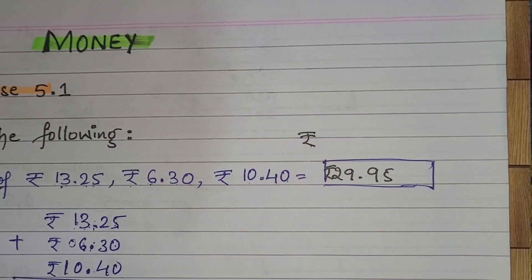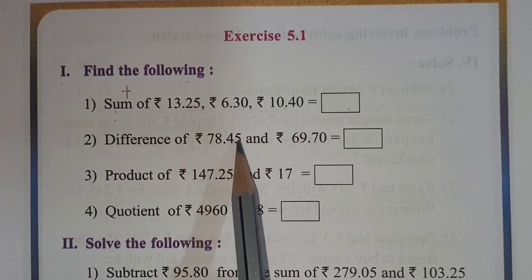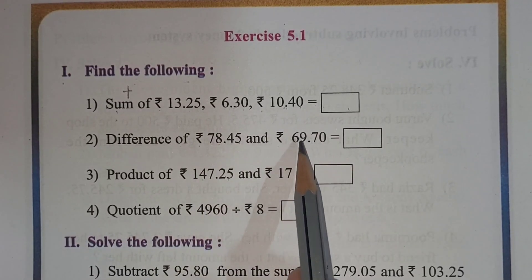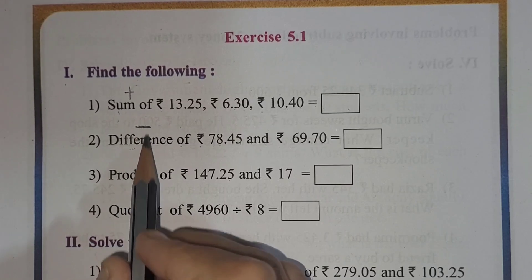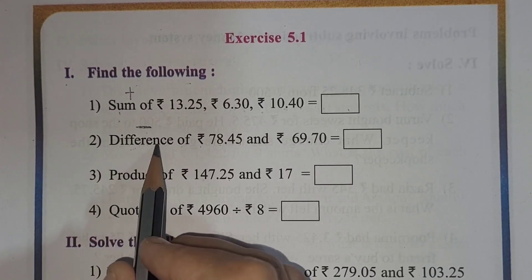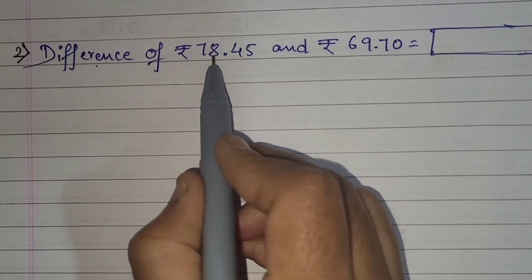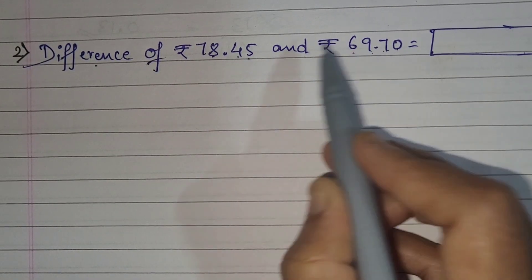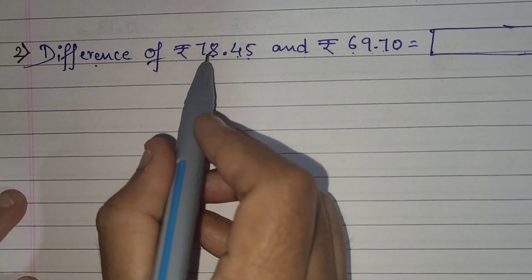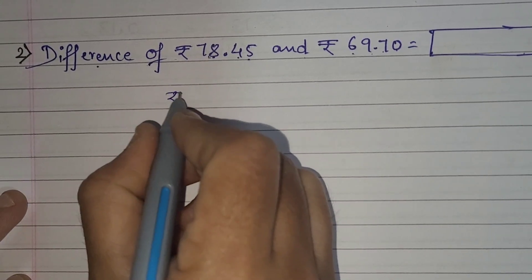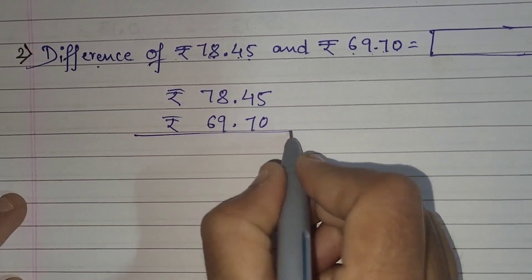Now the second one: difference of rupees 78.45 and rupees 69.70. Difference means subtraction. We have to arrange the numbers with the decimal point one below the other. So rupees 78.45 minus rupees 69.70. Let's do the subtraction.